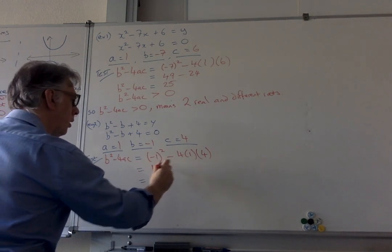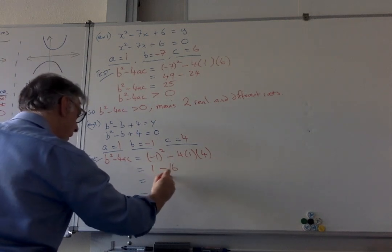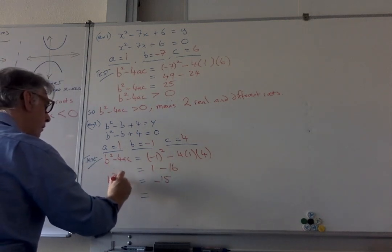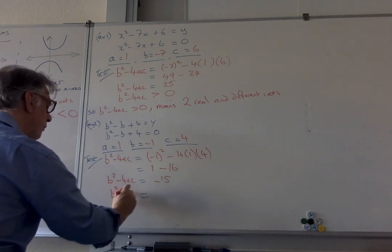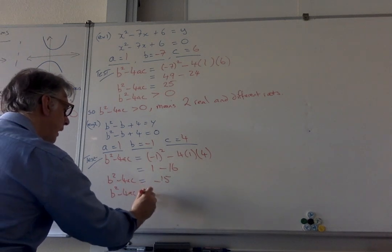So then you've got 1, and you've got minus 16, and you're going to get minus 15. So b squared minus 4ac is equal to minus 15. That means that b squared minus 4ac is less than zero.